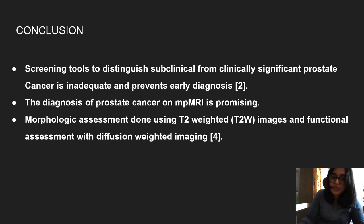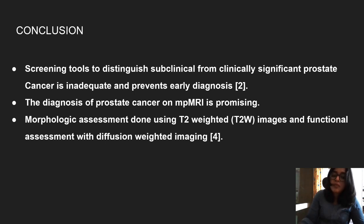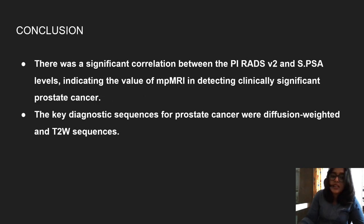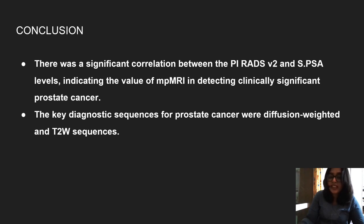Coming to conclusion, screening tools to distinguish subclinical from clinically significant prostate cancer remain inadequate, preventing early diagnosis. The diagnosis of prostate cancer on multi-parametric MRI is promising, combining morphological assessment with T2-weighted images and functional assessment with diffusion weighted imaging. There was a significant correlation between PIRADS Version 2 score and serum PSA level, indicating the value of multi-parametric MRI in detecting clinically significant prostate cancer. The key diagnostic sequences were diffusion weighted and T2-weighted imaging.